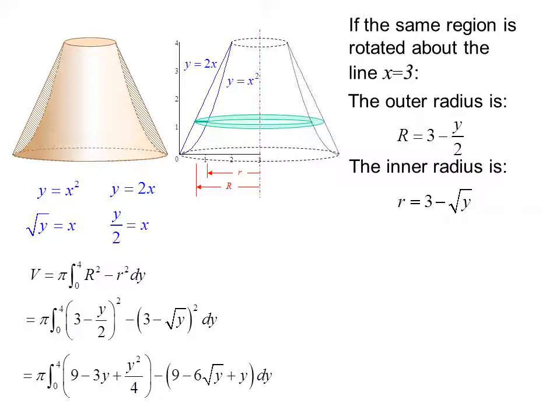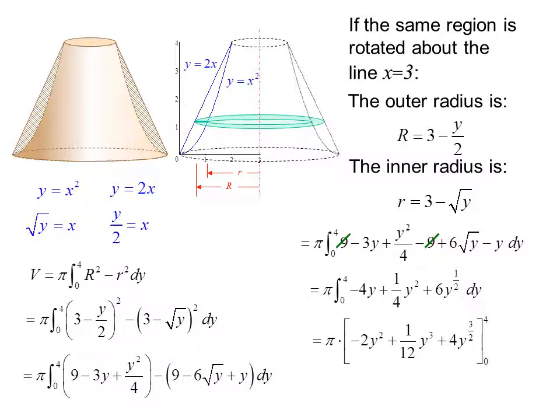We square both of the binomials, eliminate the parentheses, and we can cancel the 9's. We have the simplified expression and we changed our radical to fractional exponents. Now we take the anti-derivative and plug in our limits of integration, and we get 16 pi over 3.